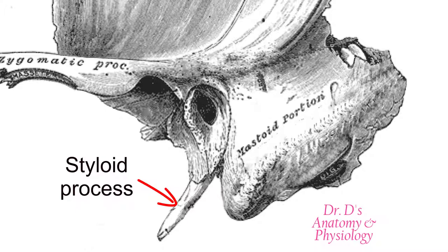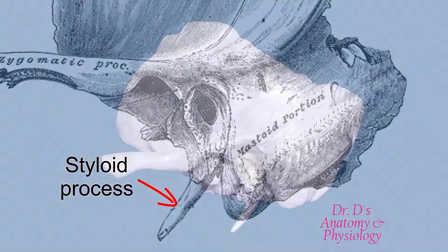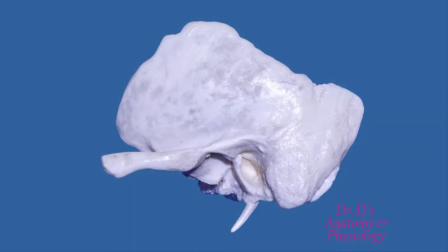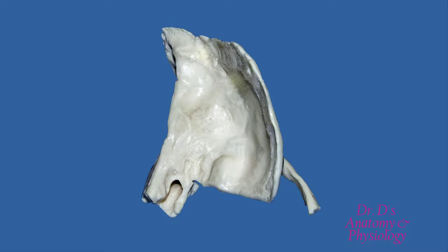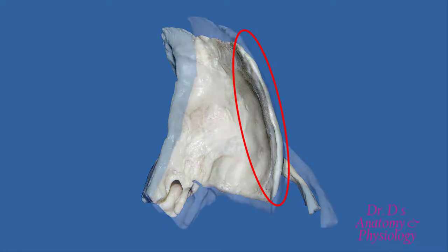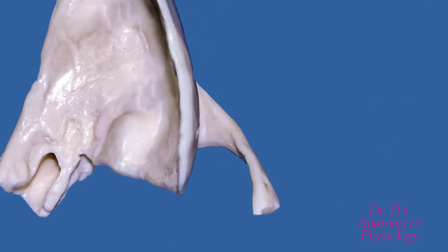The word 'styloid' implies a slender appearance — you can think of a stylus as a long, linear, slender object. Styloid means like a stake or like a spine. Let's review what we just discussed using this isolated bone from a plastic skull. Starting with the squamous portion, you can really appreciate the squamous part as being flat like a scale when you look at it from a different perspective.